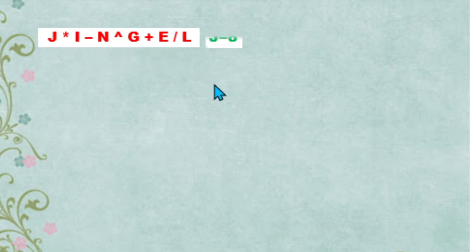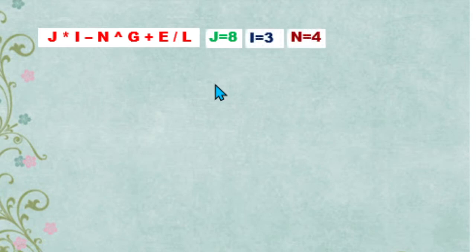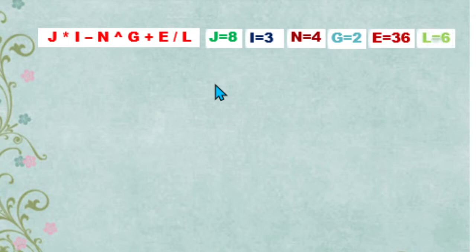We also have here the values of our operands. The value of j is 8, i is 3, n is 4, g is 2, e is 36, and the value of l is 6.